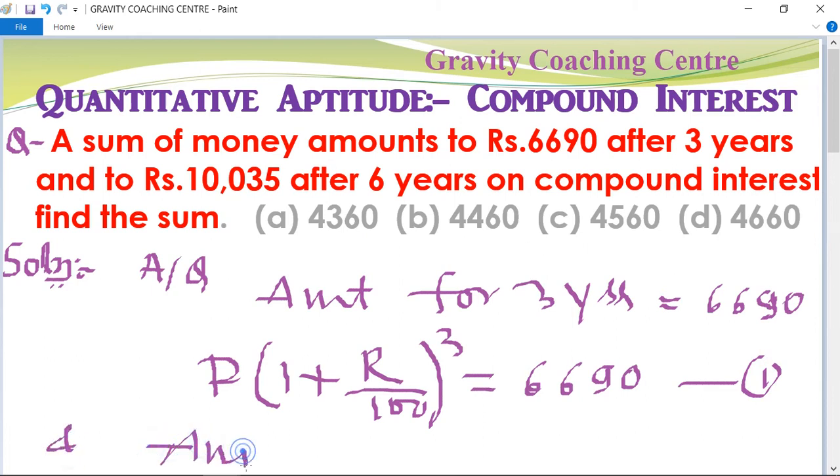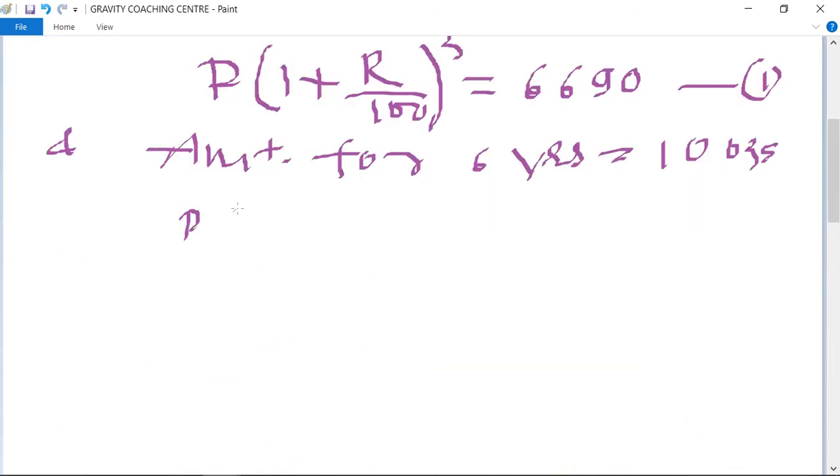Amount for 6 years equals 10,035. P times (1 + R/100) to the power 6 equals 10,035. This equation is second.